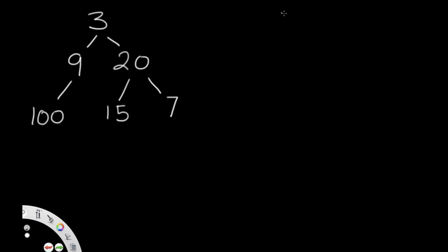Sticking with this example — 3, 9, 20, 100, 15, and 7 — the answer is 115 since 100 plus 15. We need to iterate through our tree and look for whenever we find a left leaf. I'm going to solve this using breadth-first search. You could use depth-first search, but I'll do BFS. For BFS we're going to have a queue, and it will start off holding the root. We go to the root and first check if it has a left node.